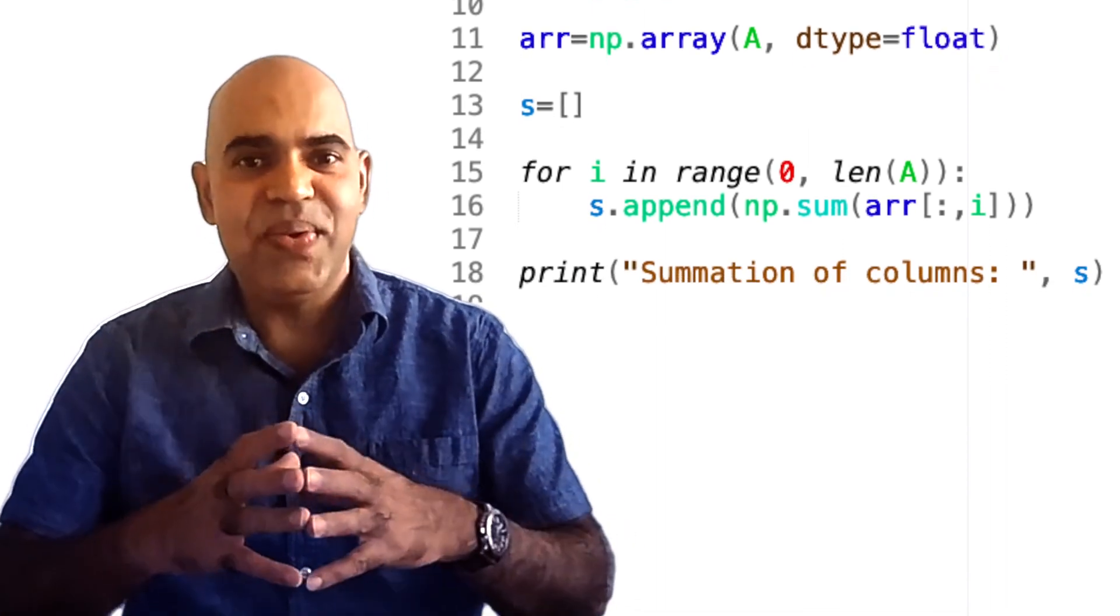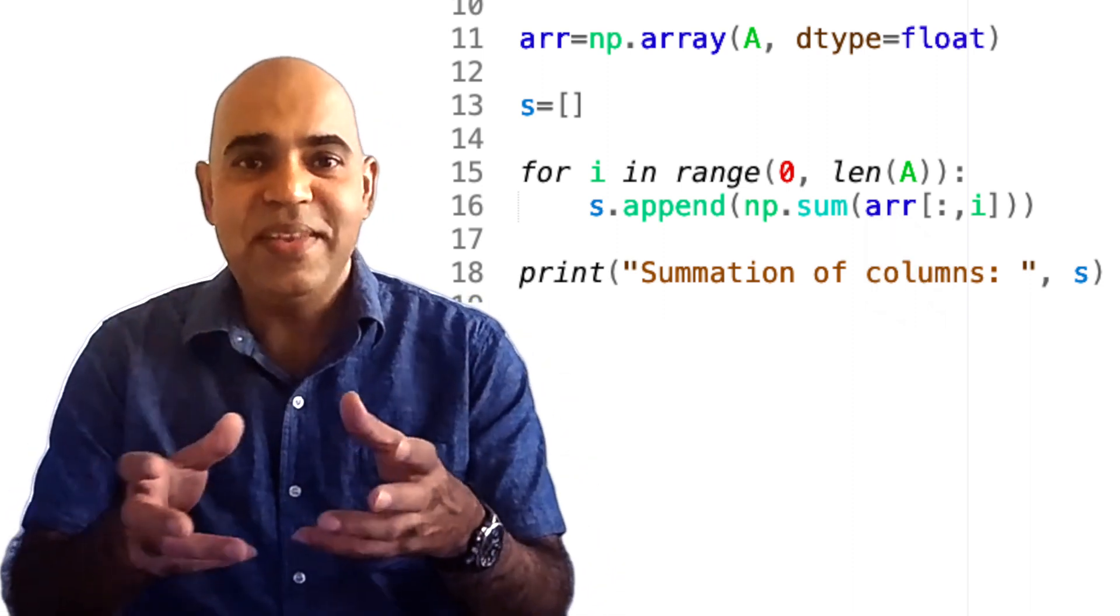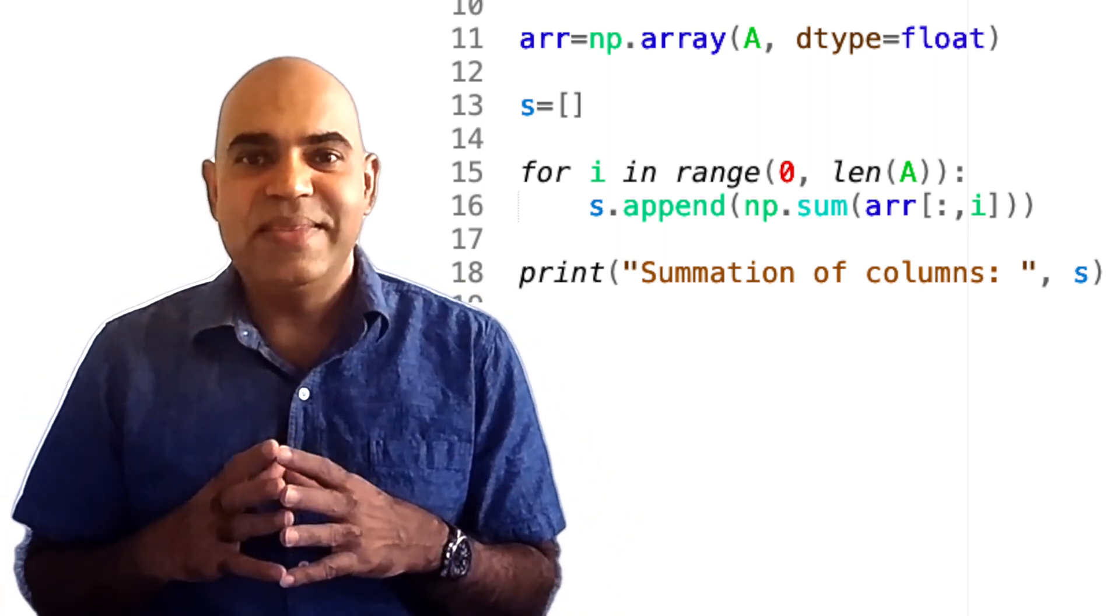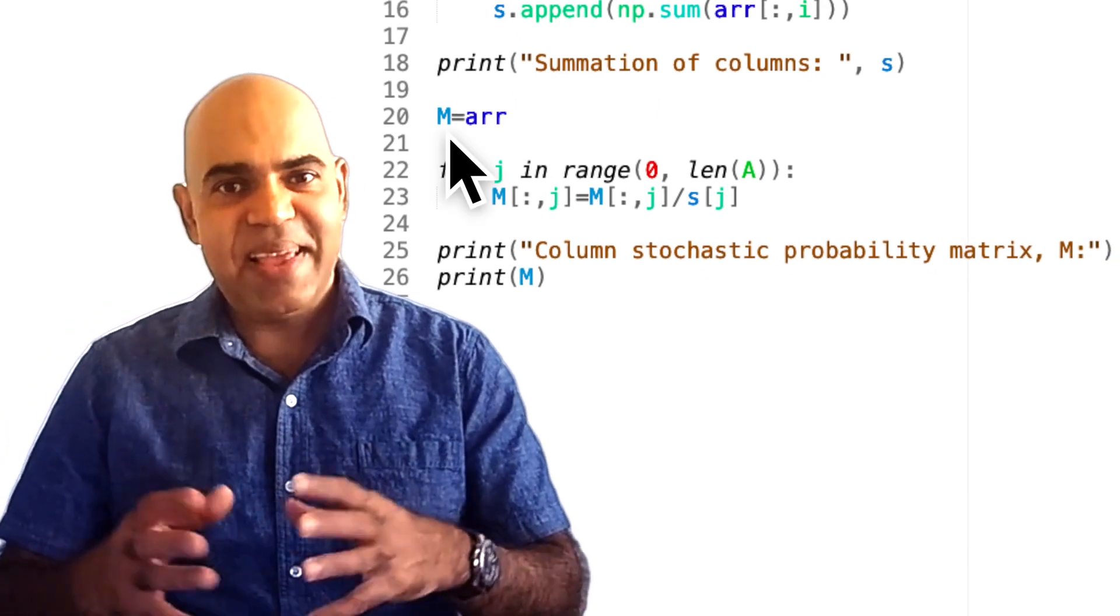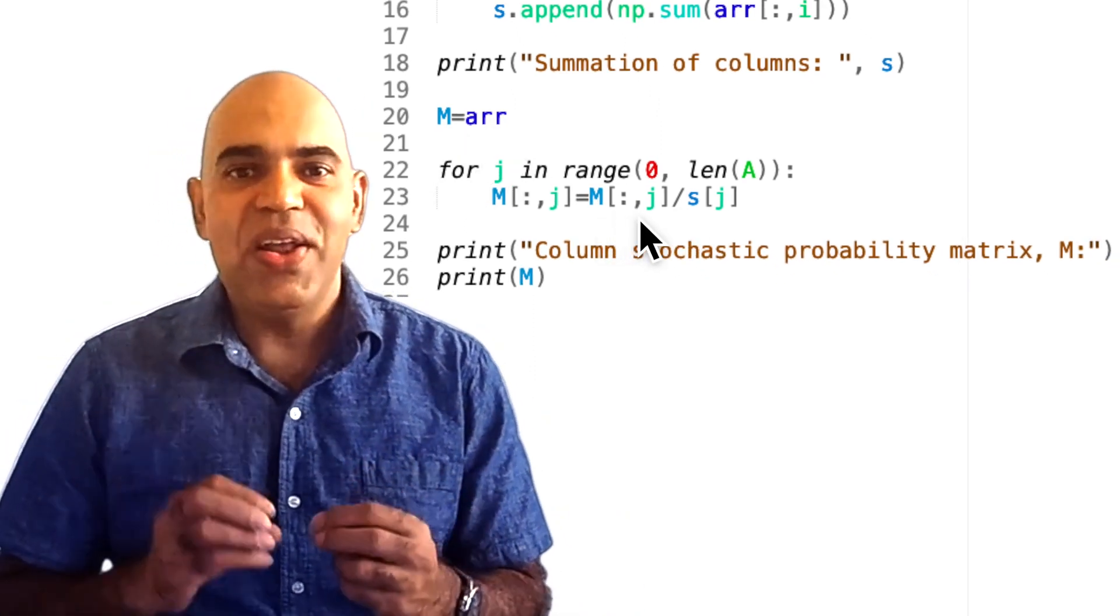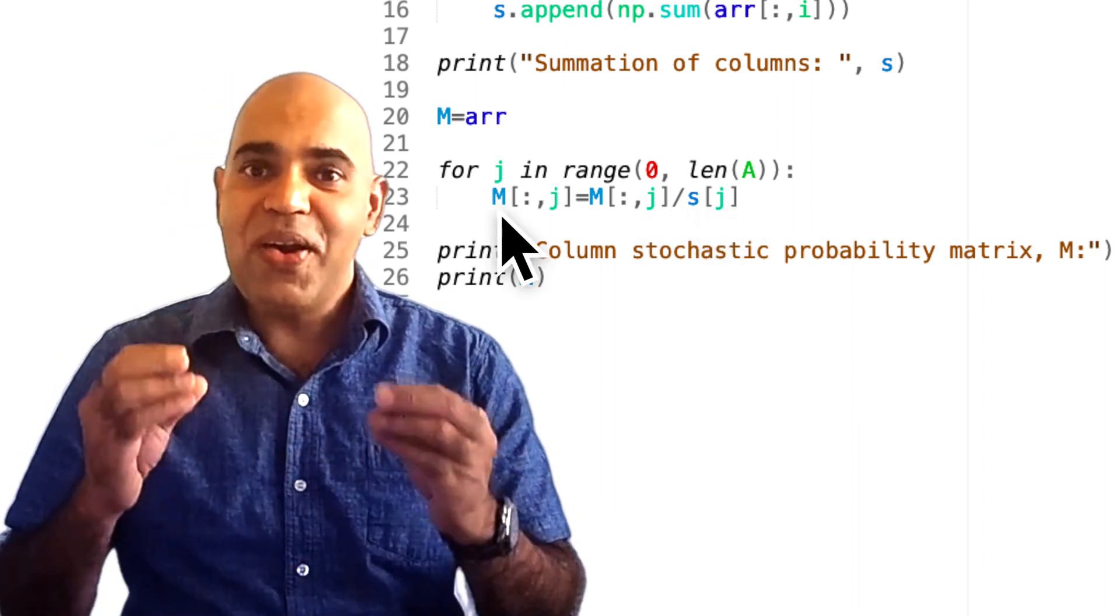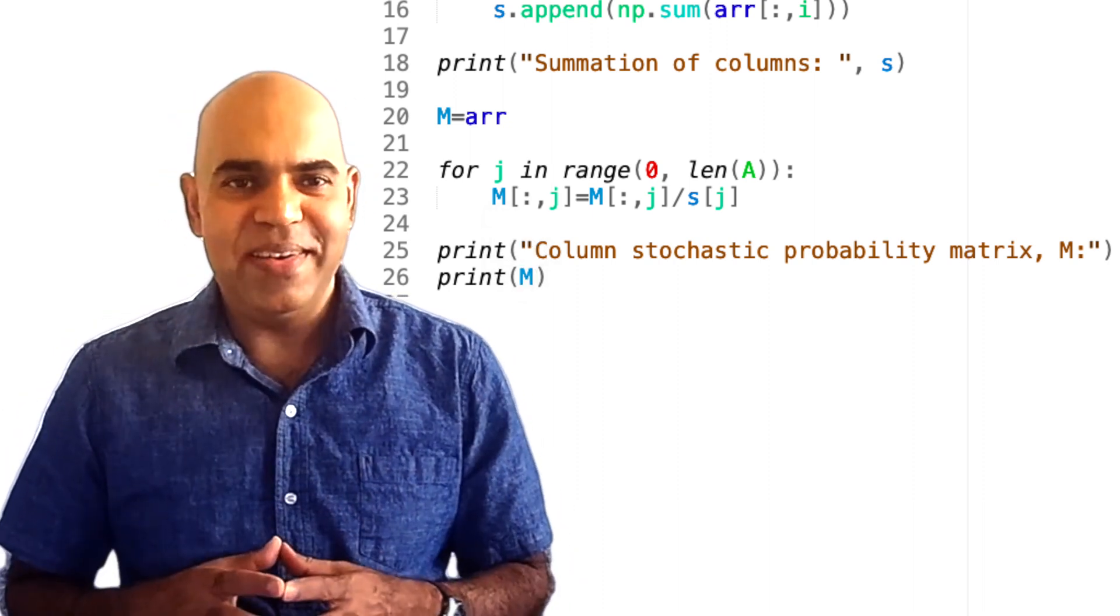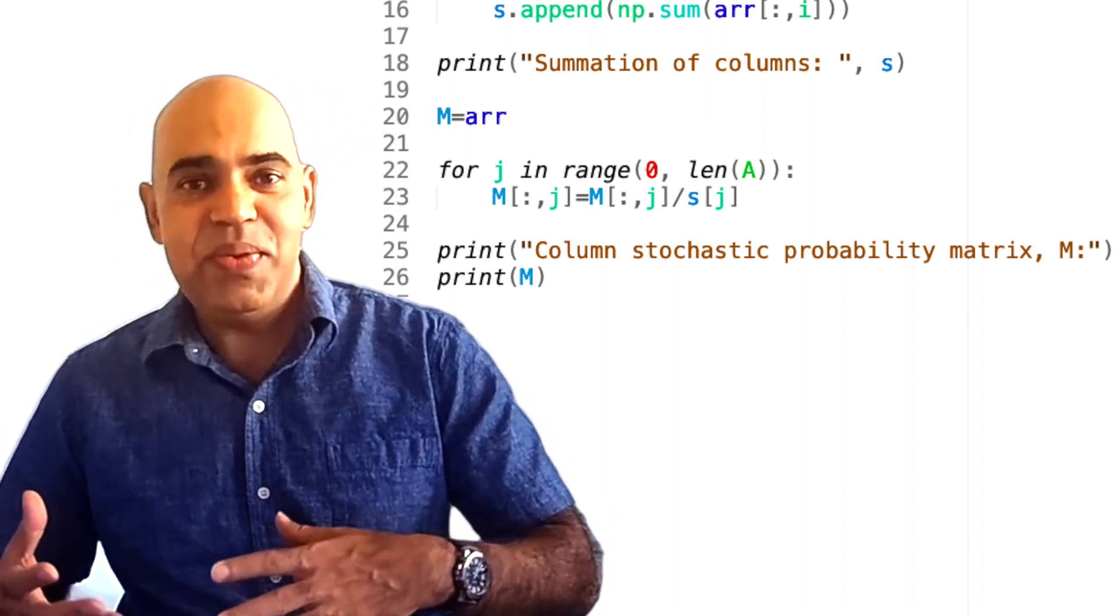Next, we calculate the sum of each column to determine the total number of outgoing links from each web page and store these sums in the list S. We then create a new matrix M by dividing each column by its corresponding sum in S. This makes M a column stochastic matrix where the sum of each column equals 1, representing the probabilities of transitioning from one web page to another.